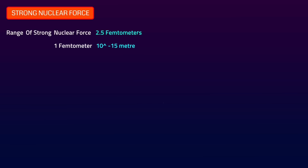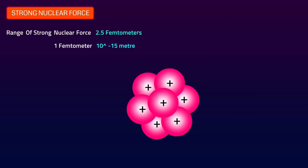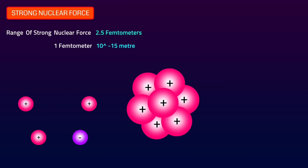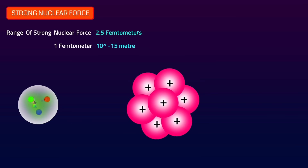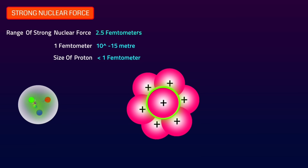Even though it's the strongest force, its range is only a few femtometers. One femtometer equals 10 to the power of minus 15 meters. We've already seen that protons have a positive charge, but how do protons stick together in the nucleus? While the same electric charges repel each other and opposite charges attract each other, this is also caused by the strong nuclear force. The strong nuclear force can exist within the range of a few femtometers. While the size of a proton is less than one femtometer, the strong force also leaks outside the proton, overcoming the electromagnetic force so two protons stick together instead of repelling each other.